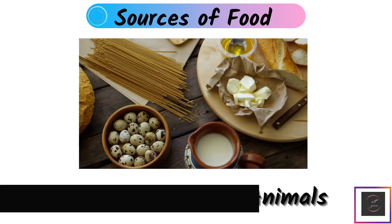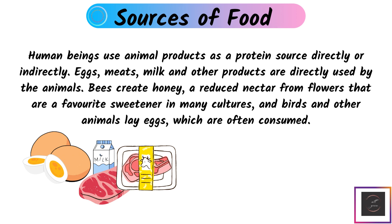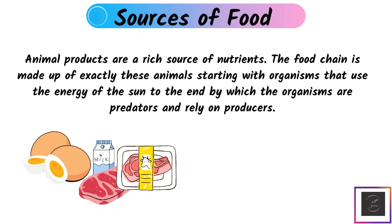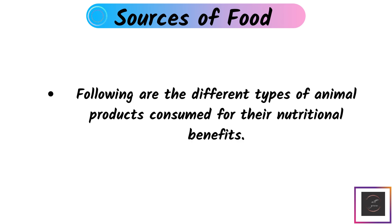Food obtained from animals: Human beings use animal products as a protein source directly or indirectly. Eggs, meat, milk, and other products are directly used from animals. Bees create honey, a reduced nectar from flowers, which is a favorite sweetener in many cultures. Animal products are a rich source of nutrients, and the food chain is made up of organisms from those using the sun's energy to predators at the top.